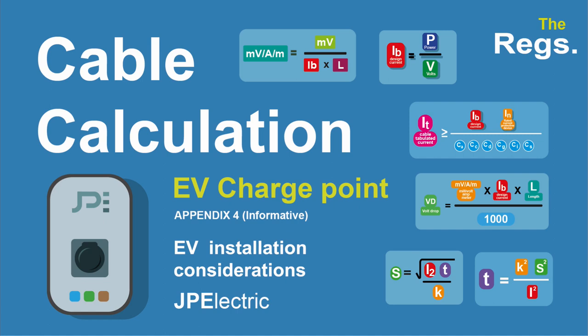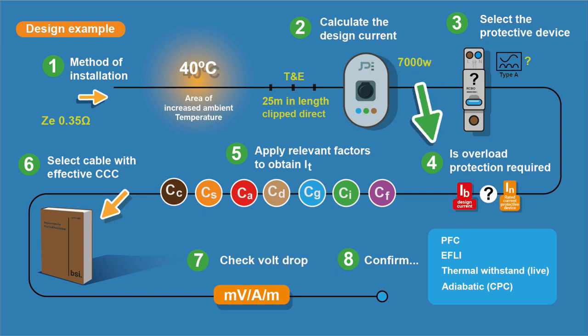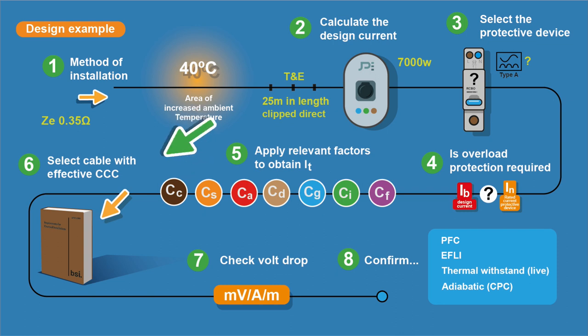Let's do a cable calculation for an EV charge point. The basics are relevant for any circuit and I'll also try to point out some considerations when you're installing an EV point — they're not that straightforward. Here's an overview: method of installation, cable choice, how it's getting installed in the building, then we calculate the design current, select the protective device, consider if overload protection is required, apply correction factors, select our final cable, check our volt drop, then confirm our cable choice is suitable for the load.